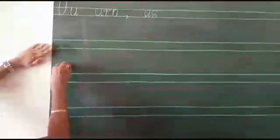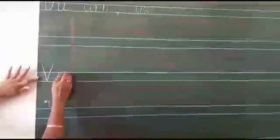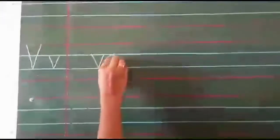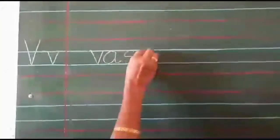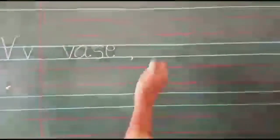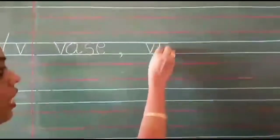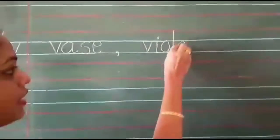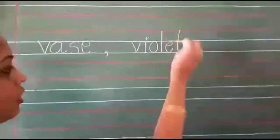Leave a line after U. Capital letter V, script letter V. V for violin, V for violet, V for vase. So we will write V for vase: V, A, S, E — vase. Comma. V for violet: V, I, O, L, E, T — violet. Okay.